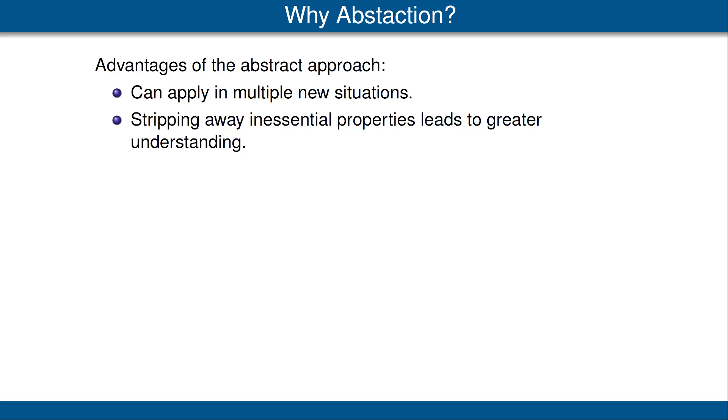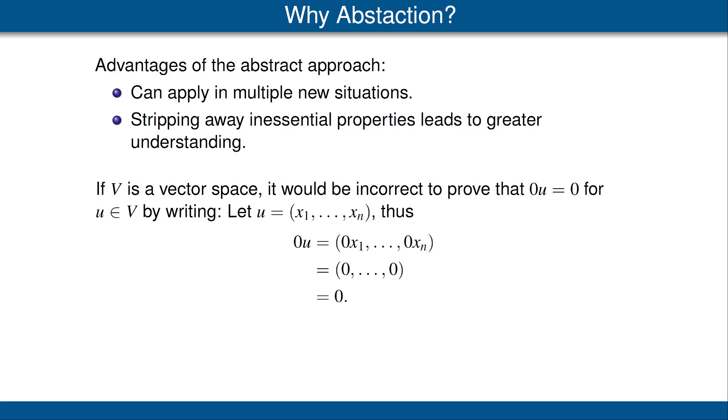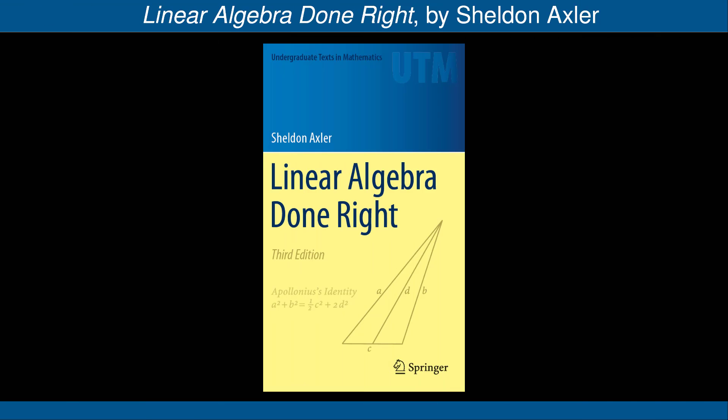Finally, one comment and warning. If V is a vector space, it would be incorrect to prove that 0u = 0 for every u in V by starting out as follows: Let u equal (x₁, ..., xₙ), thus 0u, and so on. That's incorrect because we're dealing with an abstract vector space, and u might not be of the form a list of numbers. It might be some other object, it might be a function, something more abstract. Thus, the proof that we gave in the previous set of slides is the correct way to do that. We need not look at specific coordinates. To be specific and to repeat, an element of a vector space V is not necessarily of the form x₁, ..., xₙ, although of course elements of F^n are of that form. This concludes the video on definition of vector space.